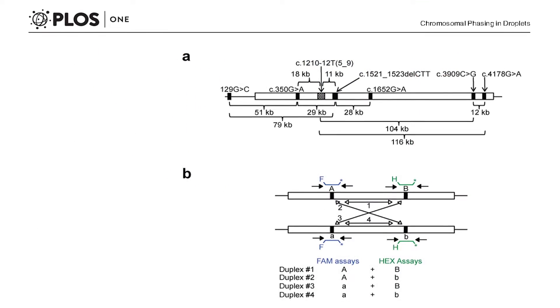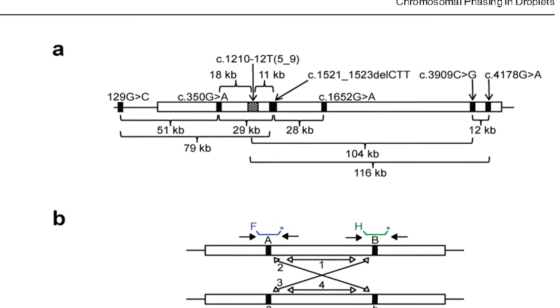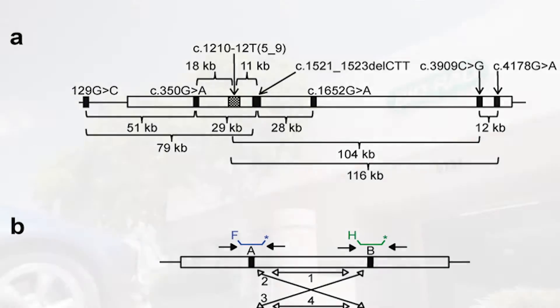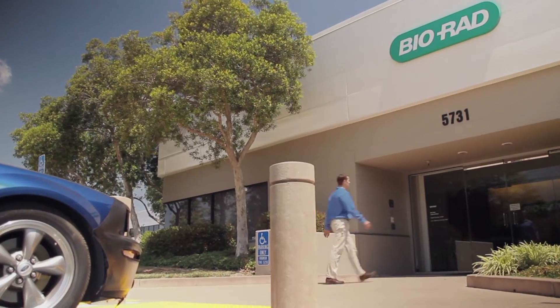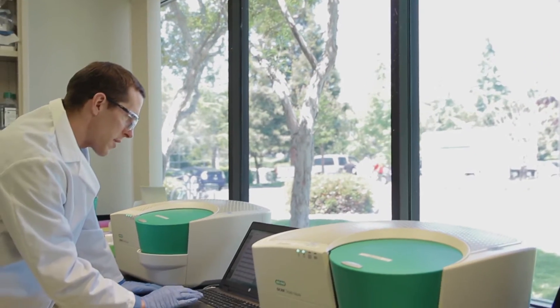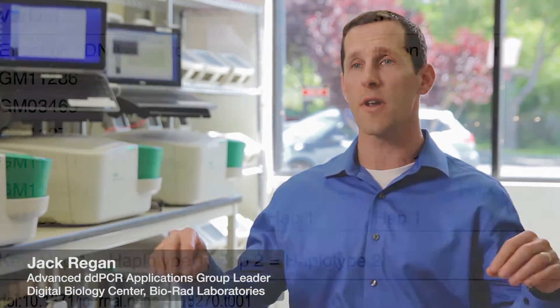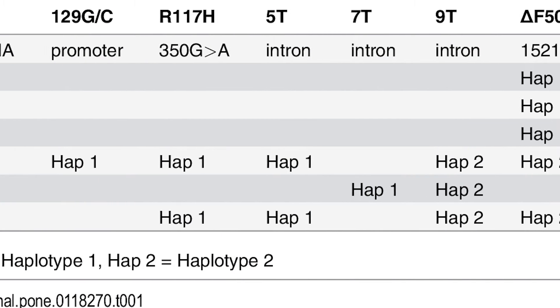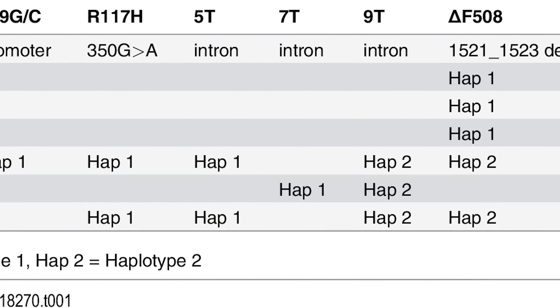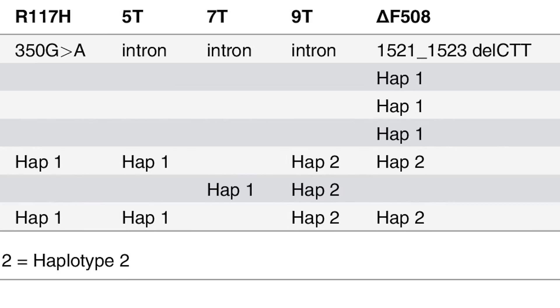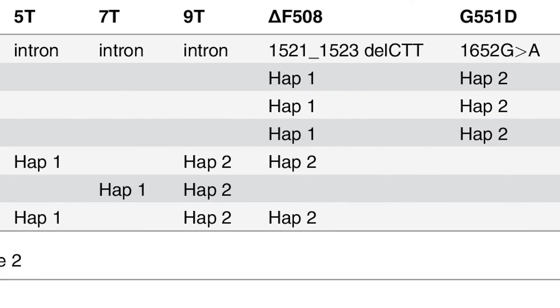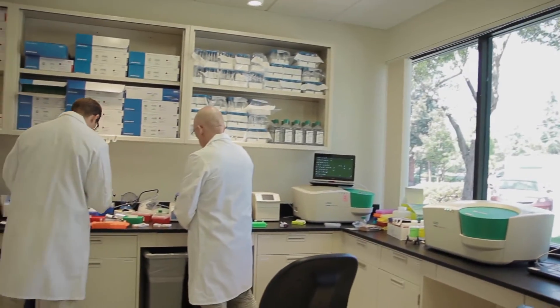In demonstrating their method, the collaborators used mutations associated with cystic fibrosis. One of the researchers, Jack Regan of the Biorad Digital Biology Centre, told us why this offered a good model: 'One of the hidden ideas in disease is that there are stretches of variants along a single stretch of DNA that actually work together to create a pathogenic phenotype. We chose cystic fibrosis because the gene itself is actually very long and has many different mutations that have been identified to influence the course of disease.'